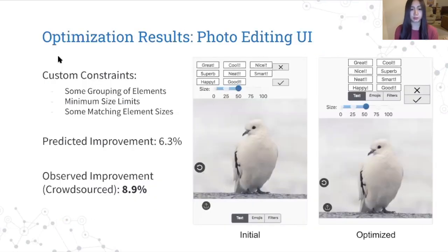So we start by applying our optimization technique to new layouts of this photo editing UI. And since we're optimizing for task performance, to ensure that the output has good aesthetics, we added some custom constraints via penalty functions. So the optimized layout had a predicted performance improvement of 6.3%. And to verify that this optimized layout actually had better human performance, we once again crowdsource task performance from Amazon Turk. But this time we assigned at least 10 workers to each layout, and we observed an improvement of 8.9%. So the improvement in task performance is likely due to the increase in size of certain UI elements, as well as the increased distance between some of the UI elements, and also the grouping of the sticker and the sticker buttons.